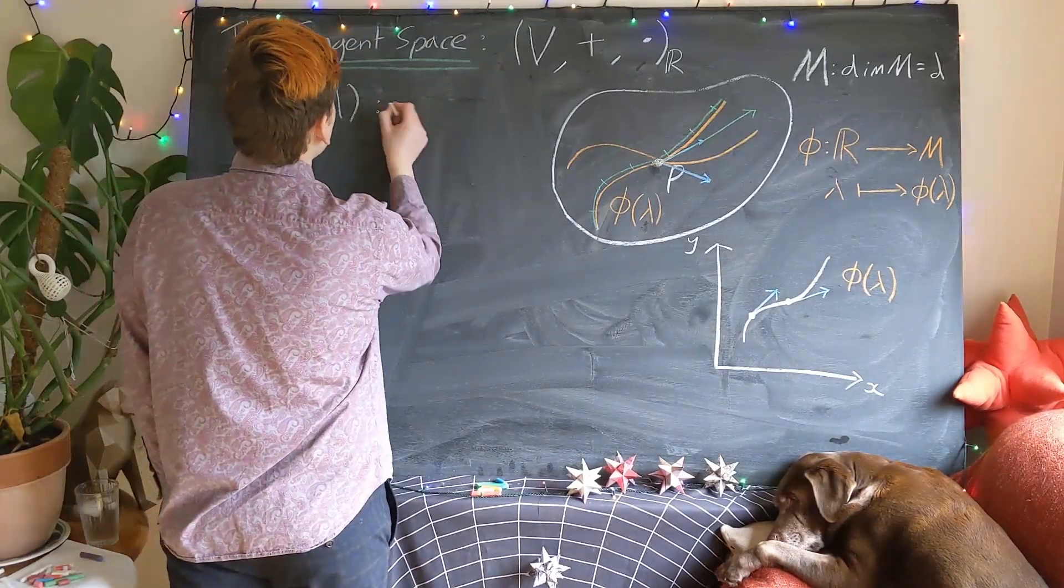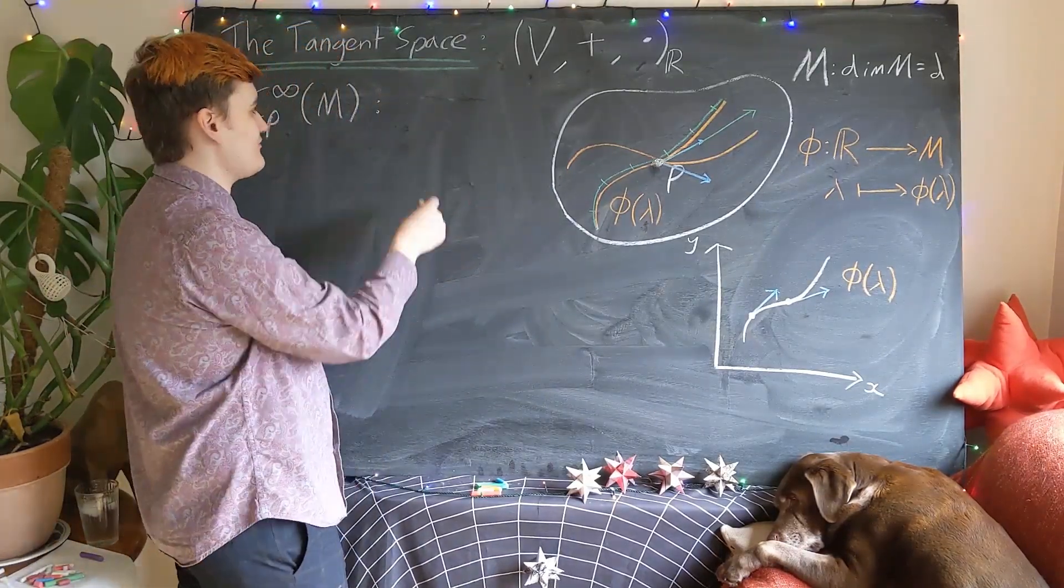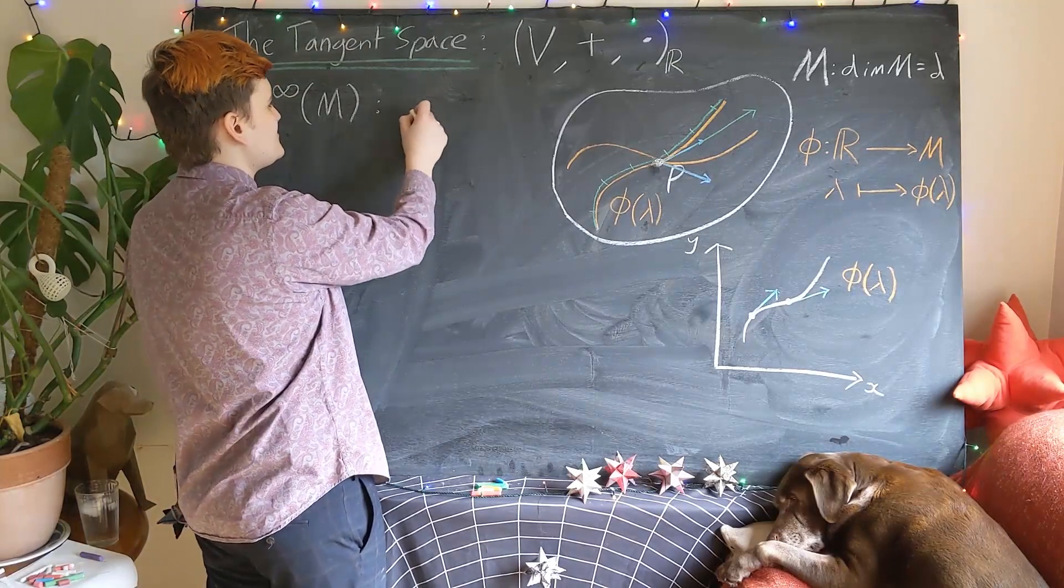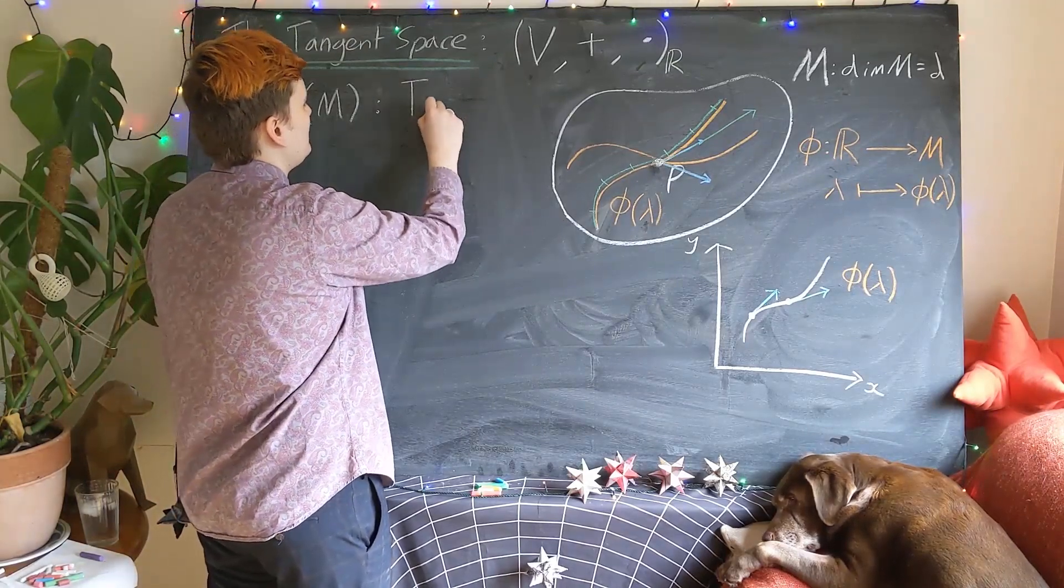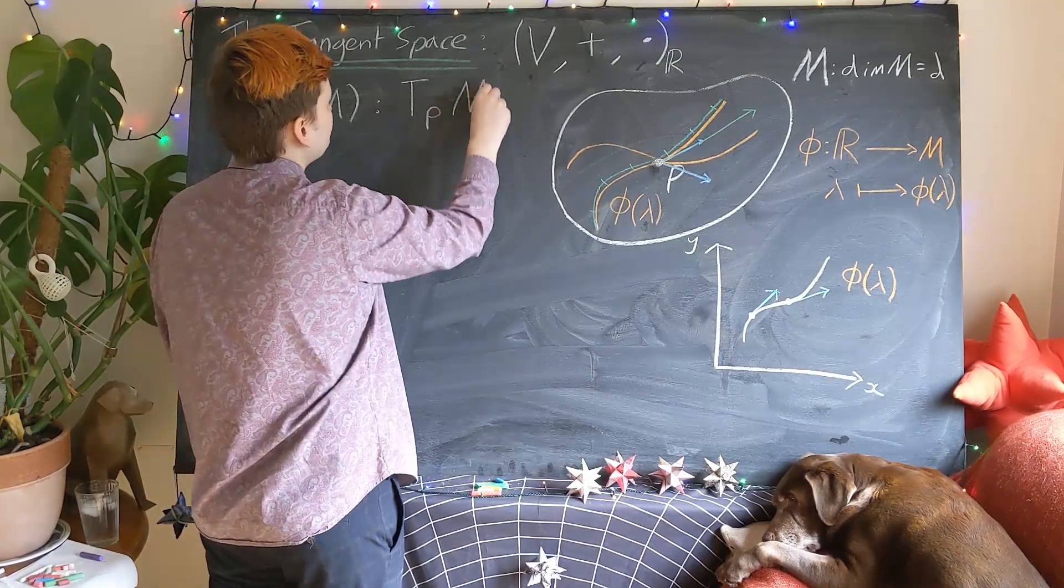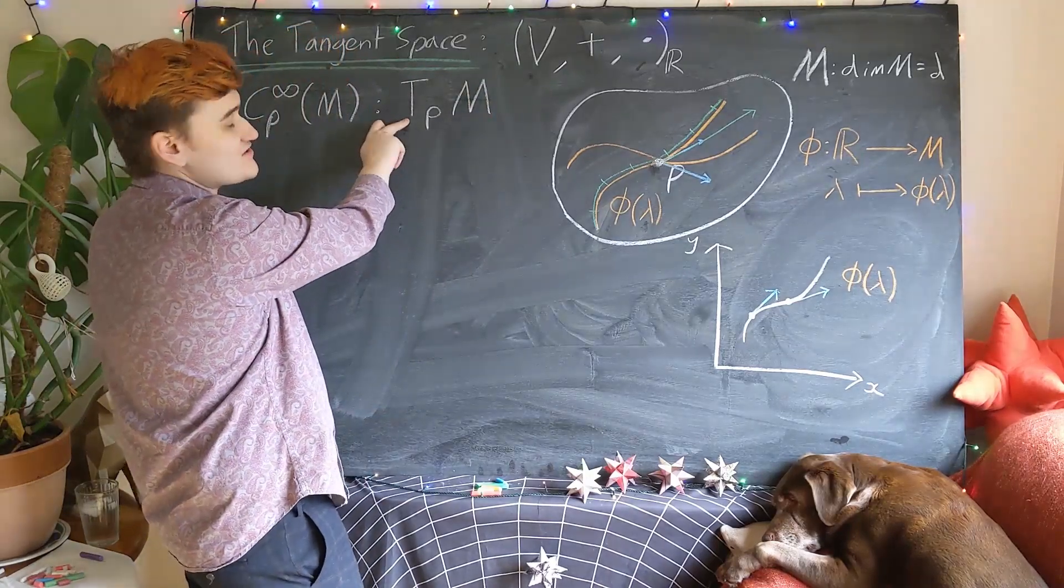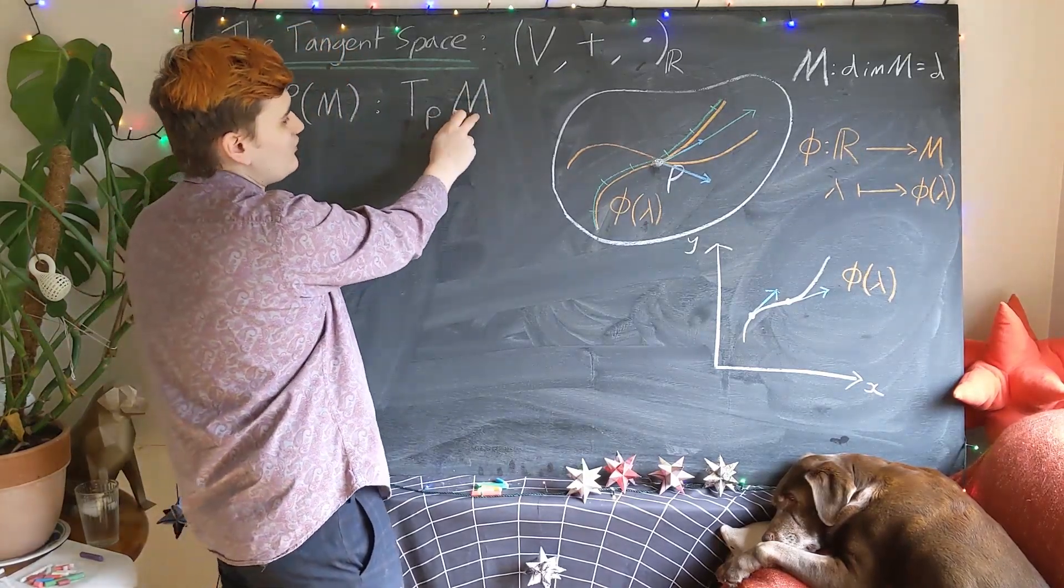So just quickly before we move on, I'll just give you the terminology. We refer to the tangent space as TPM. So this is read as the tangent space at the point P of the manifold M.